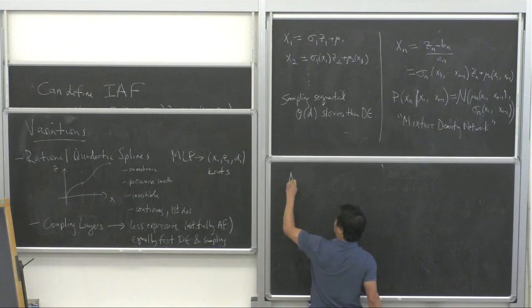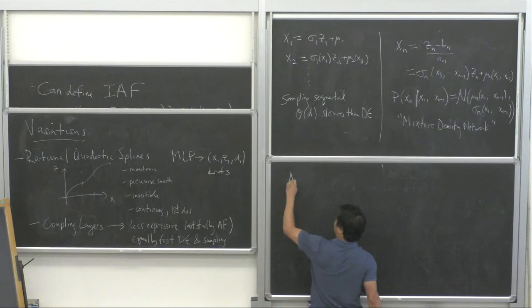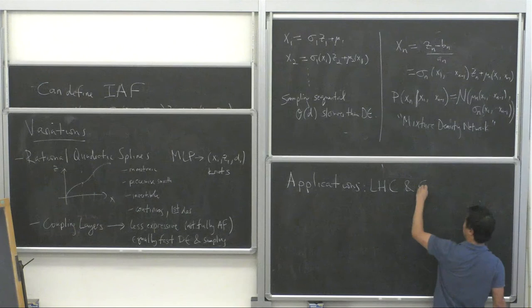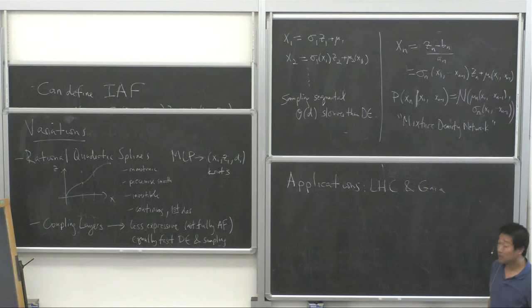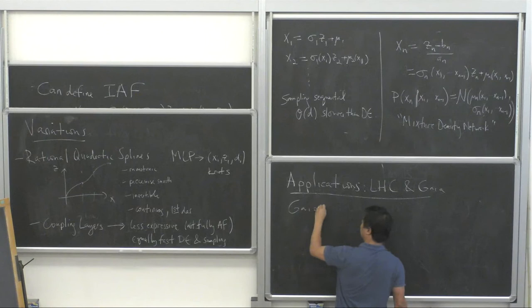As the title says, we've been applying normalizing flows to the LHC and to the Gaia data from the Gaia satellite. Let me briefly mention some facts about Gaia.